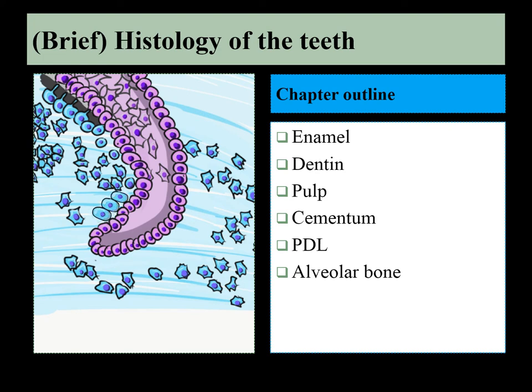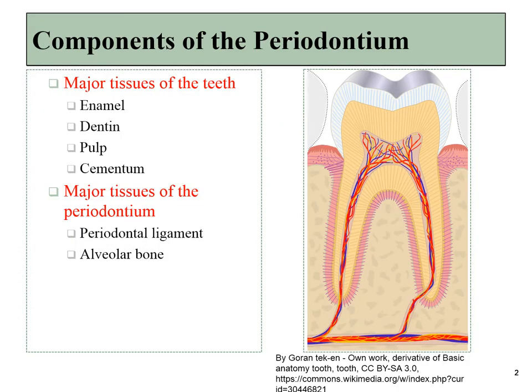This will be a short recording on the histology of the teeth. For quick review, make sure you remember what types of tissue are found in the teeth and the periodontium.